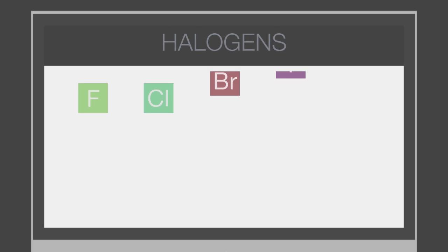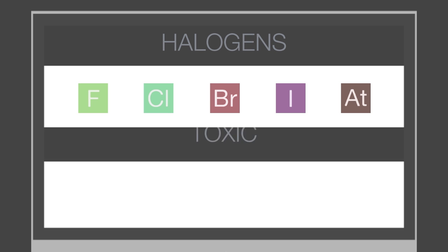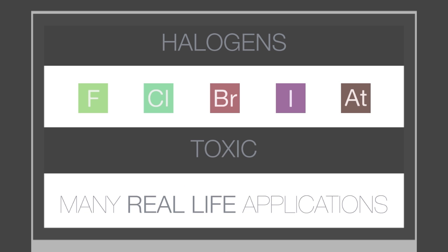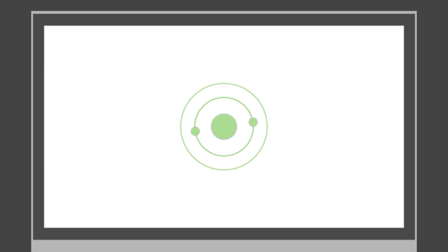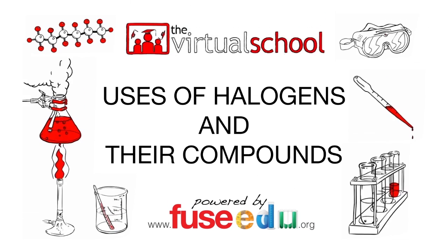We have mentioned before that halogens in their elemental form are toxic. However, their compounds are in fact very useful and used in everyday life. In this lesson, we will learn about the many uses of halogens and their compounds.